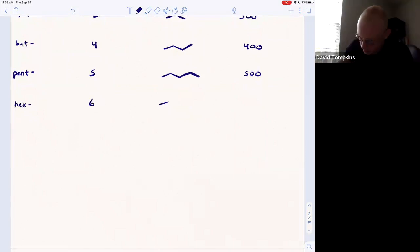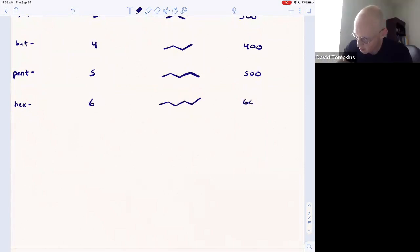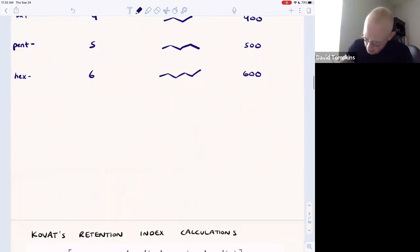Hexane is six carbons long: one, two, three, four, five, six, and has a Kovats index of 600. There are four more you should be responsible for knowing. Heptane, seven carbons long, has a Kovats index of 700.